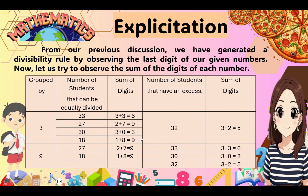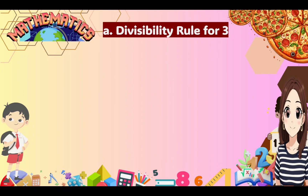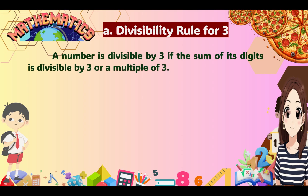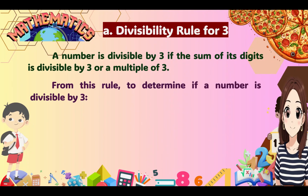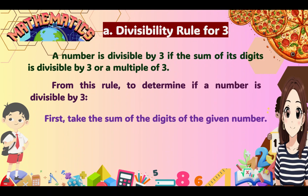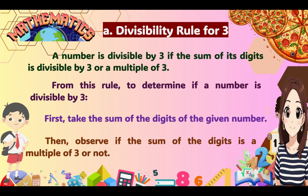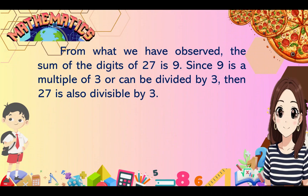Based on that presentation, we can arrive at a conclusion and form the divisibility rule for 3, which was established by mathematicians: a number is divisible by 3 if the sum of its digits is divisible by 3 or a multiple of 3. To apply this rule, first take the sum of the digits of the given number, then check if that sum is divisible by 3. For example, the sum of digits of 27 is 2 plus 7 equals 9. Since 9 is a multiple of 3, then 27 is divisible by 3.